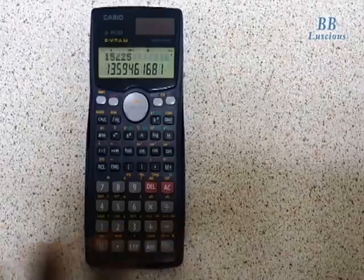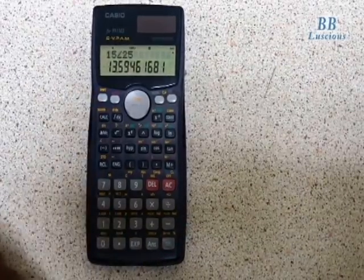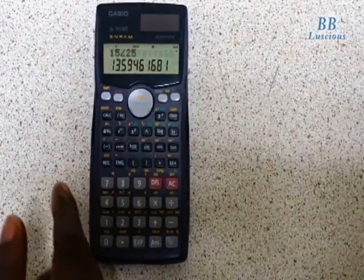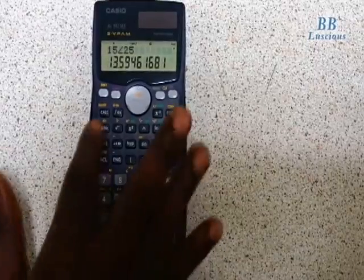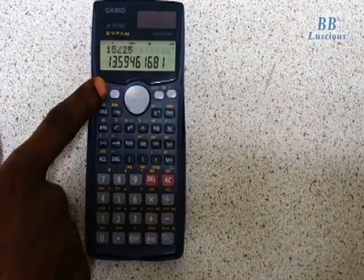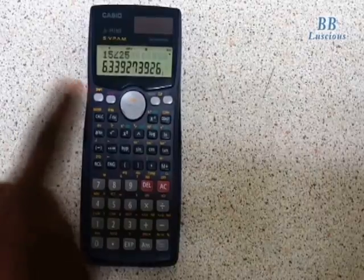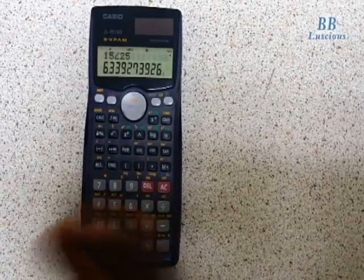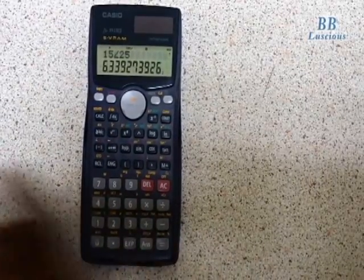I press equals and I get 13.59. How do I get the imaginary part? I just press Shift Answer. This will give me the imaginary part. This same thing applies when you're doing addition or subtraction.